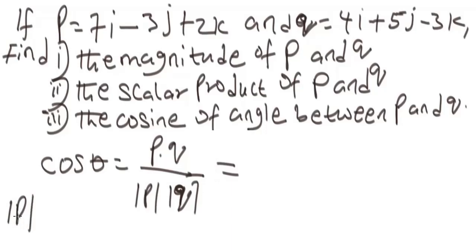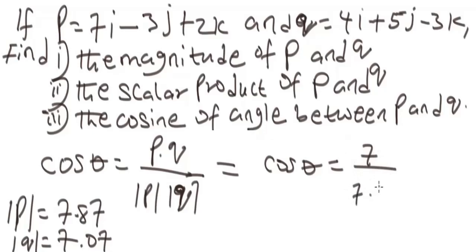Remember, the magnitude of vector P, when we did it, we got it to be 7.87, that of vector Q, we got it to be 7.07. When we substitute the values, we're going to have cos theta. The scalar product is 7, 7 over 7.87 times 7.07. When we simplify this, it's going to give me 0.125.